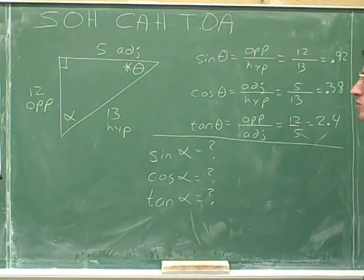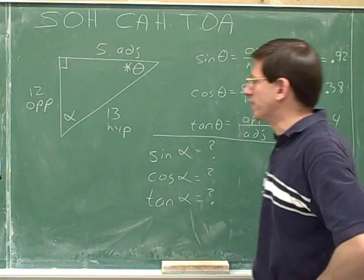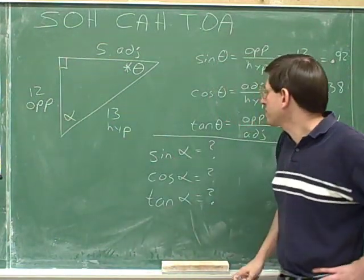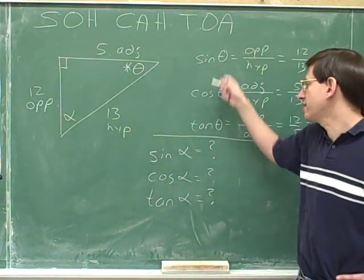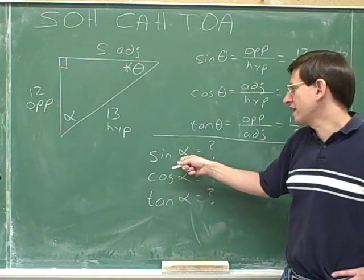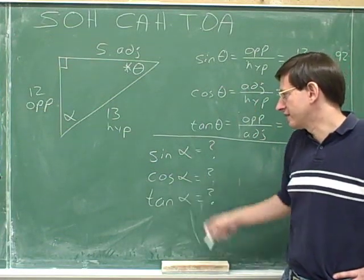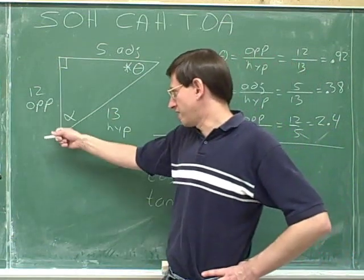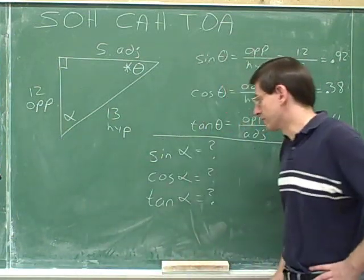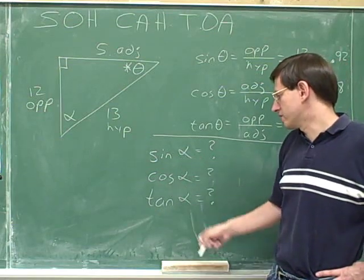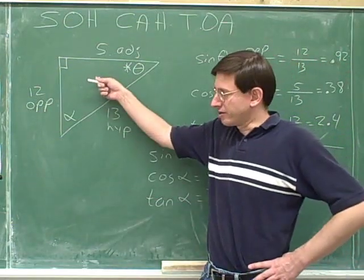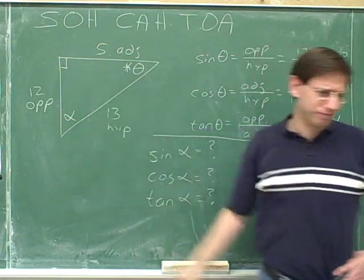Notice that we're sticking with the same triangle as before. I've got the same exact triangle, but now instead of asking for the sine, cosine, and tangent of theta, I'm asking for the sine of alpha, the cosine of alpha, and the tangent of alpha. You can see that I've labeled alpha as the angle down here. So please try to find the sine, cosine, and tangent of alpha for the same triangle we were just working on.